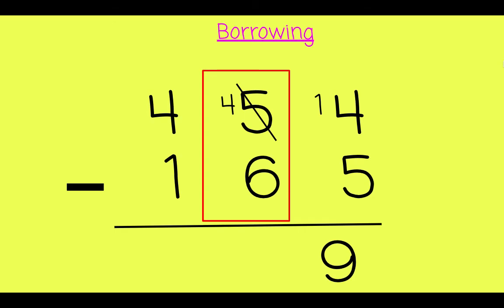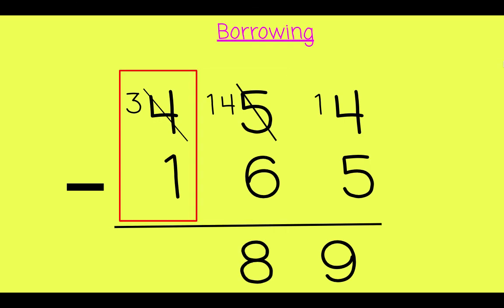4 take away 6. We can't do that, so we have to borrow from the 100s column. So let's borrow 100. Good. 140, but in this case we'll talk about it as 14. 14 take away 6 is 8. And over here, 3 take away 1 is 2.